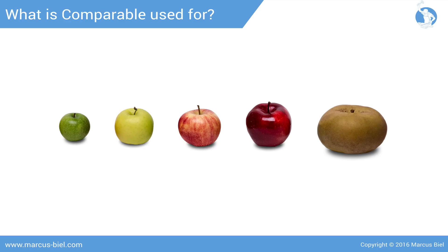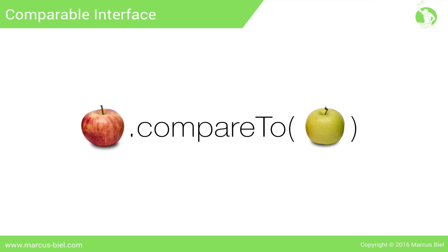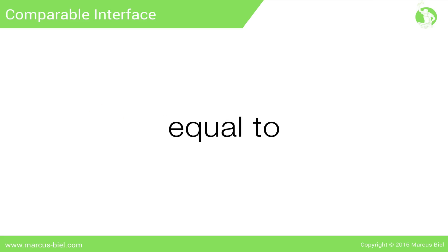In a nutshell, while Comparable is used in the sorting process, it cannot sort the objects on its own. The Comparable interface defines just one method: int compareTo. T is a generic type. In our case, it will be the type Apple. As a concrete example, you call the compareTo method on one apple and give it another apple to compare itself to. So in our example, the result of the comparison could be less than, equal to, or greater than the other apple.